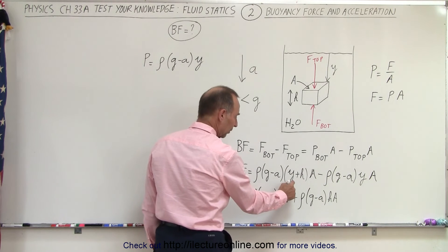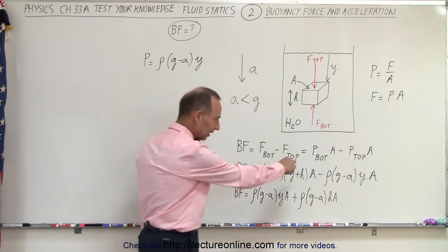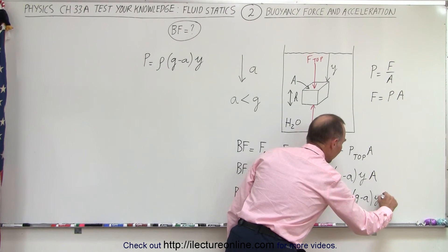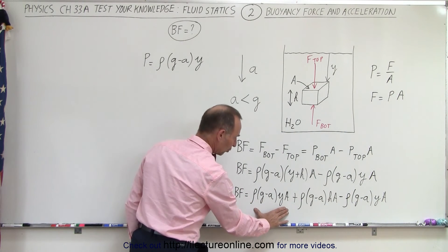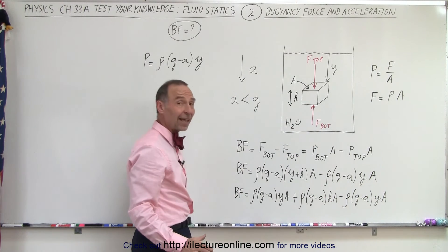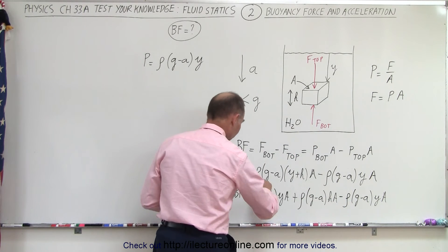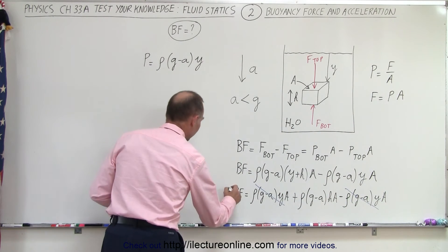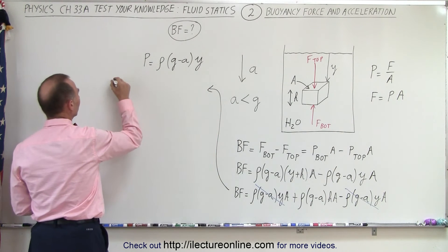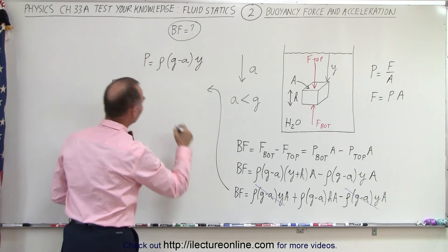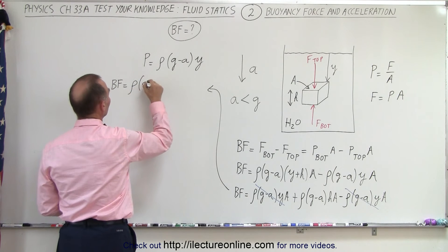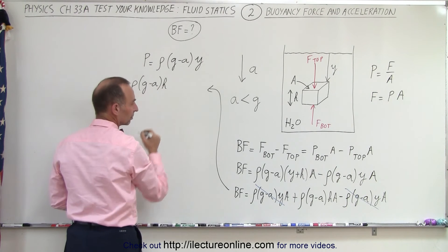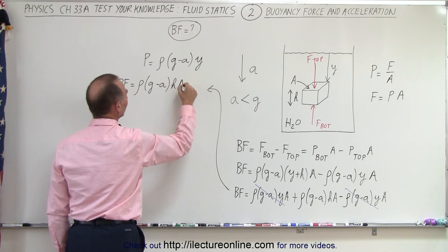Multiplying out, we get: BF = ρ(g − a)(y)(A) + ρ(g − a)(h)(A) − ρ(g − a)(y)(A). The first and last terms are exactly the same — one positive, one negative — so they cancel out. That leaves the buoyancy force equal to ρ(g − a) × h × A.